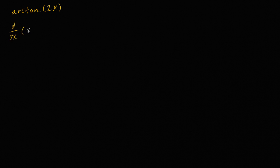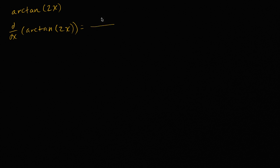If you feel good about it, I encourage you to pause the video and try to work through it yourself. You might have tried and probably took the first derivative. The derivative with respect to x of arc tangent of 2x is — and this is a refresher — the derivative of arc tangent of x is 1 over 1 plus x squared, so this is going to be 2 over 1 plus 4x squared.